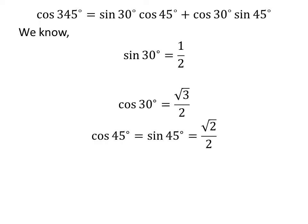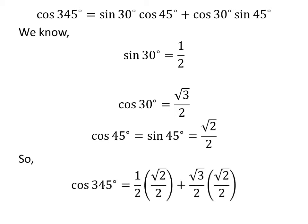As we know, sine of 30 degrees is equal to 1/2, cosine of 30 degrees is equal to square root of 3 upon 2, and cosine of 45 degrees is equal to sine of 45 degrees is equal to square root of 2 upon 2. So we plug in these values in the above equation.